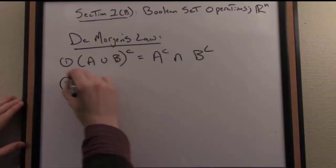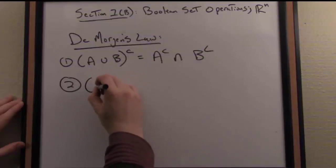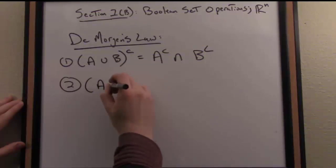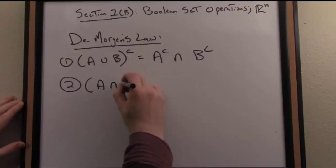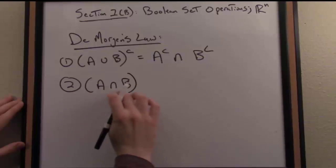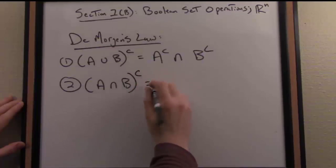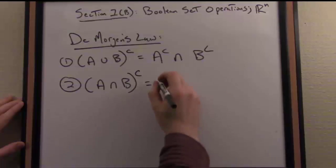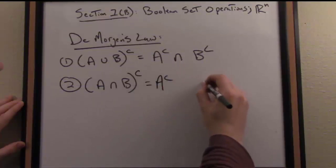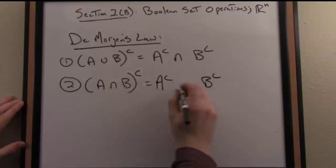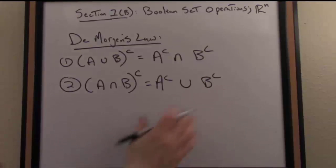On the other hand, the alternative version of De Morgan's Law looks like this. We basically invert this boolean operation inside the parentheses, so we take now the intersection of A and B complement, and once again, we preserve the pattern on the right. It's going to complement the sets and then flip the operation inside the parentheses, so we get the union now of A complement and B complement.